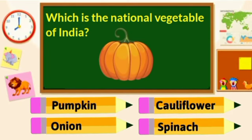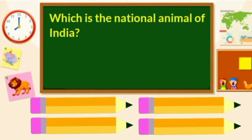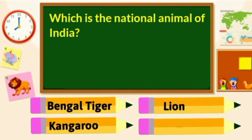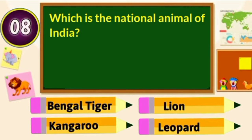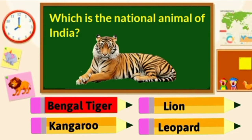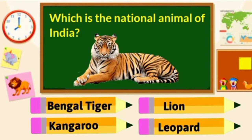Which is the National Animal of India? Bengal Tiger, Lion, Kangaroo or Leopard? Bengal Tiger is the National Animal of India.